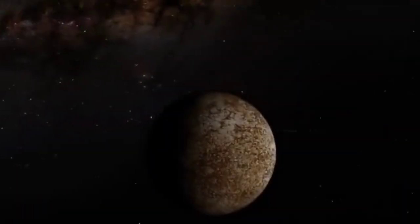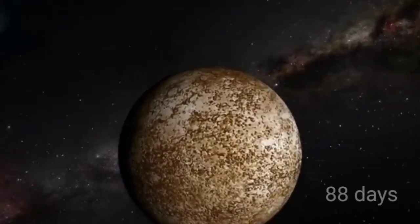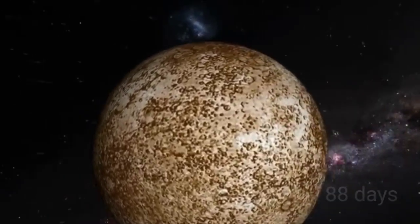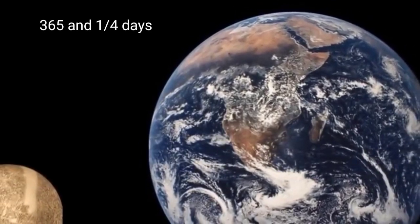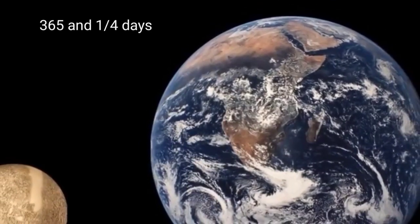Remember students, Mercury that only takes 88 days to go once around the sun. Poor Neptune takes 164 years to go around the sun. And our Earth, it takes 365 and one-fourth days to revolve.